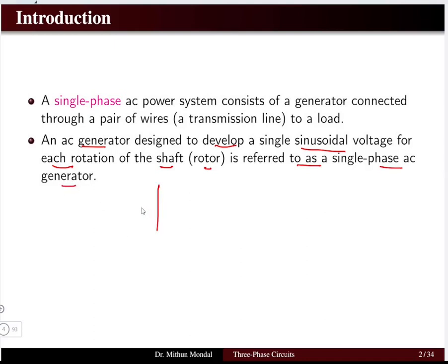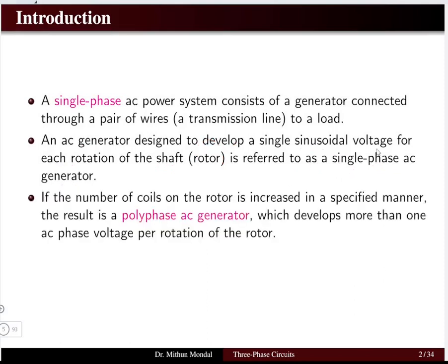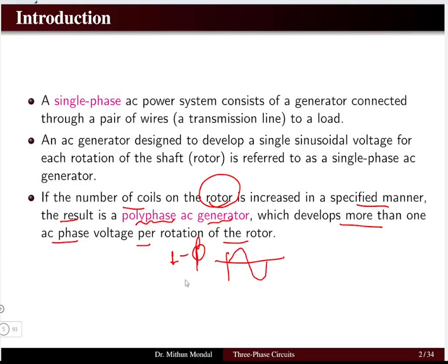Since we have a single-phase system, the power generated is in single phase. The rotor or shaft of the generator rotates to develop single-phase power, and hence the generator is known as a single-phase AC generator. Now if the number of coils on the rotor side is increased in a specified manner, the result is a polyphase AC generator, which develops more than one AC phase voltage per rotation of the rotor.